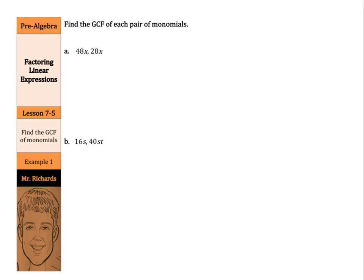The greatest common factor, GCF, of two monomials is the greatest monomial that is a factor of both. There are several different ways to find the GCF of these. If we focus here and take our 28x and our 48x.